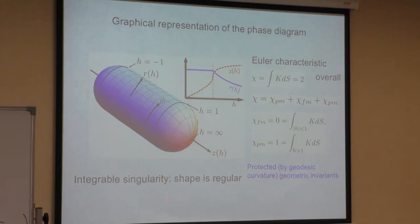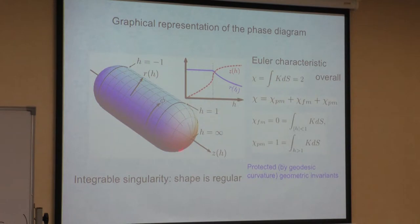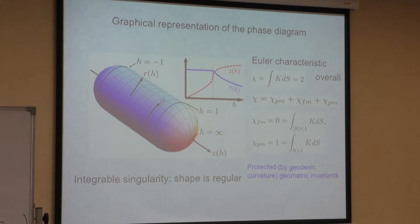Whether there is a phase transition or not doesn't matter—it just characterizes the manifold. A second-order phase transition cannot introduce any discontinuity; it can introduce curvature singularities but no topological change. The interesting thing is that this Euler characteristic of two consists of three parts: one from the hemisphere at h less than minus one, zero from the cylinder, and one from the other hemisphere. This turns out to be completely universal—whatever you do to your phase, these contributions of 1, 0, 1 always remain the same, as long as you don't change the nature of the phase transition.